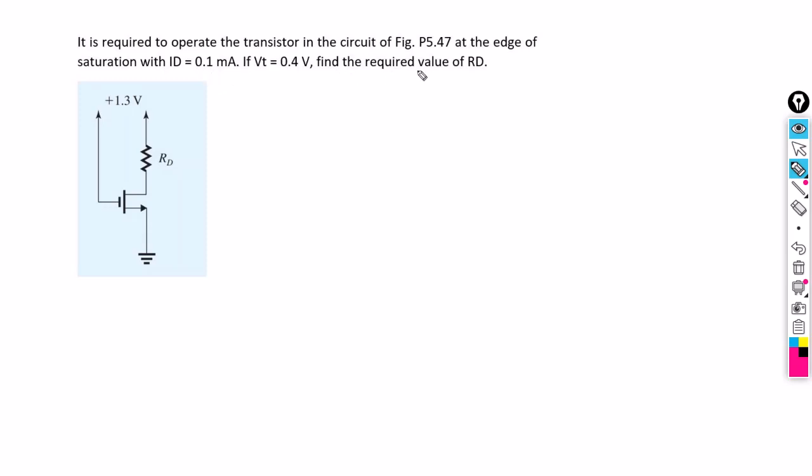In this question, we need to find out the value of drain resistance Rd. To find out the drain resistance, let's first identify the terminal voltages of the transistor. This is the gate terminal, this one is the drain terminal, and this one is the source terminal.